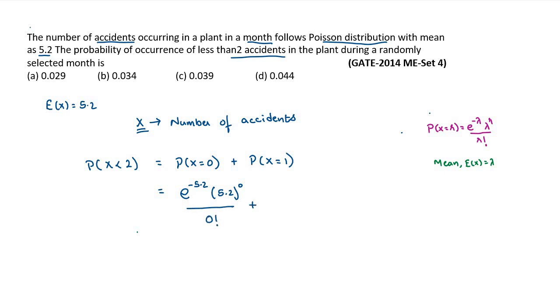probability that only one accident occurs, which is e to the power of minus 5.2, times 5.2 to the power of 1, divided by 1 factorial.